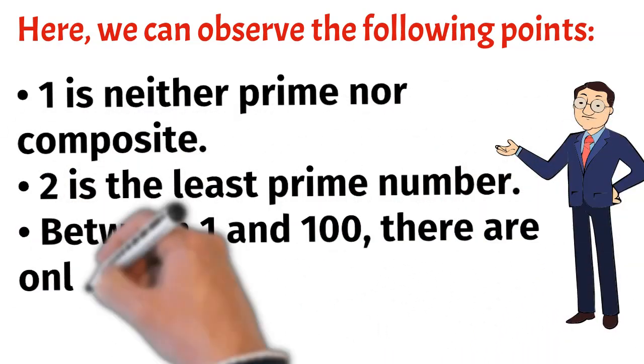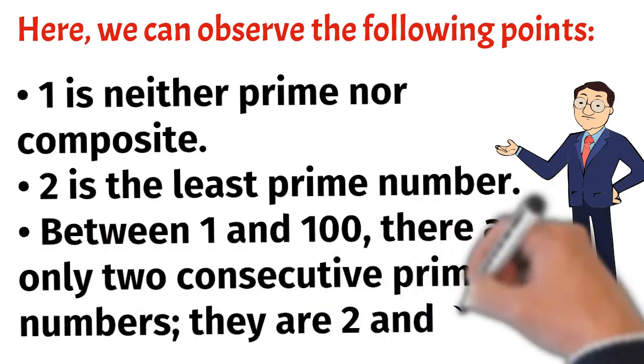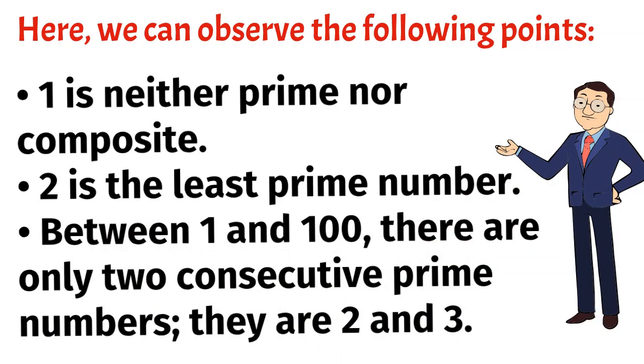2 is the least prime number. Between 1 and 100 there are only 2 consecutive prime numbers. They are 2 and 3.